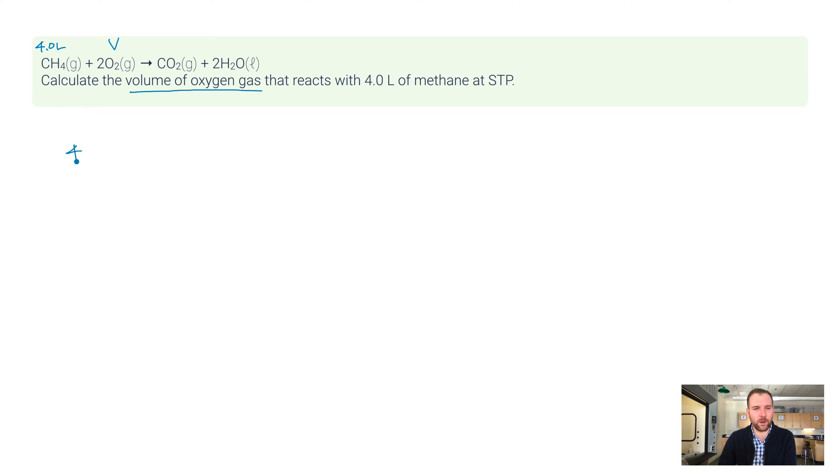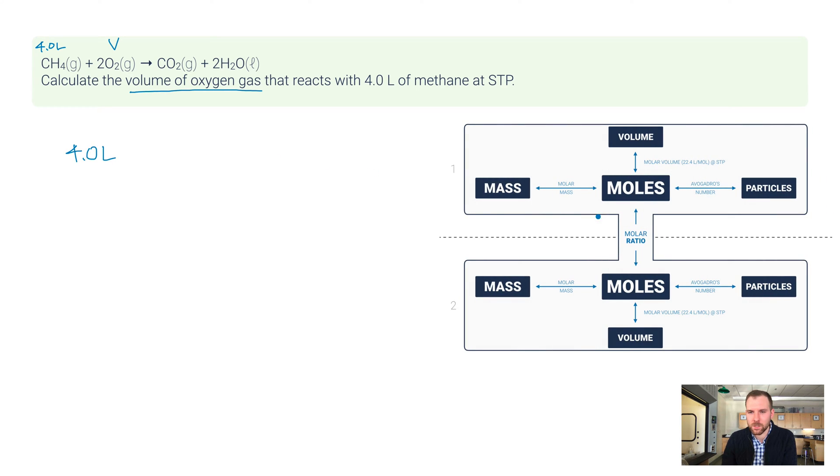Let's start with 4.0 liters. Here's our little roadmap. We're starting here with CH4. What we want to do is get to the volume of the other substance, which in this case is O2. Here's our path: I want to use the molar volume 22.4 liters per mole to convert from liters to moles. Once I'm in moles, I'm going to use the molar ratio to convert to moles of the other substance, in this case O2. From there, I want to use the molar volume one more time to get into volume of O2.